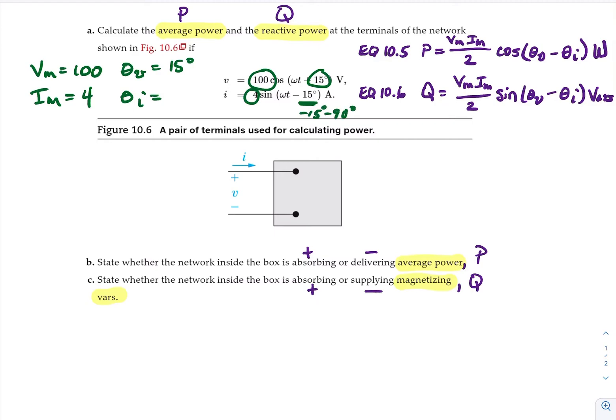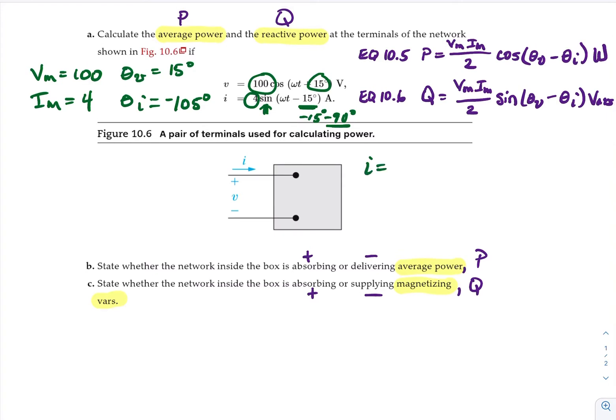Why? Because this is expressed in sine, and we want to change that and express it in cosine. So to do that, we subtract 90, and we'll rewrite our current as I equals 4 cosine omega T minus 15 degrees minus 90 degrees amps. So I equals 4 cosine omega T minus 105 degrees.